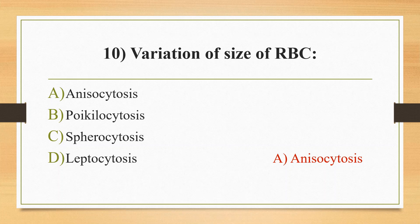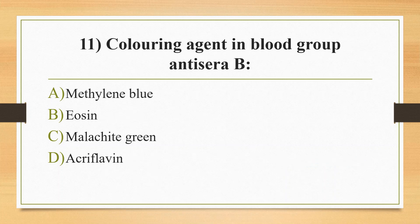Eleventh question: coloring agent in blood group anti-A serum — option A methylene blue, option B eosin, option C malachite green, option D acriflavine. The answer is option D, acriflavine. In anti-A serum, trypan blue is used as the coloring agent giving a blue color, while anti-B serum has a yellow color.